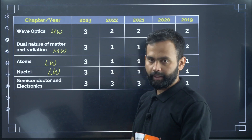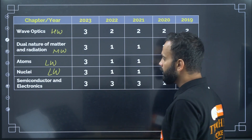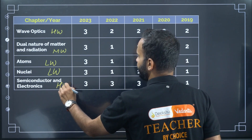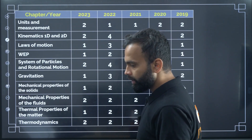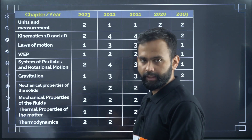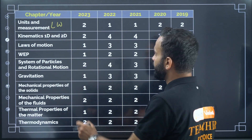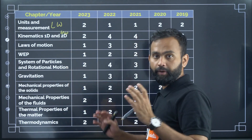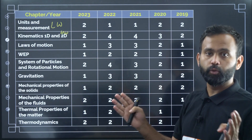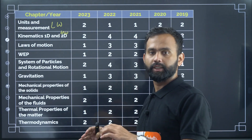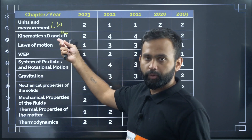Second year syllabus is over. Now for first year syllabus: Units and Measurement is a low weightage chapter. Kinematics 1D and 2D — I have combined motion in a straight line and motion in a plane — is a high weightage chapter. Laws of Motion is a moderate weightage chapter, not low weightage.